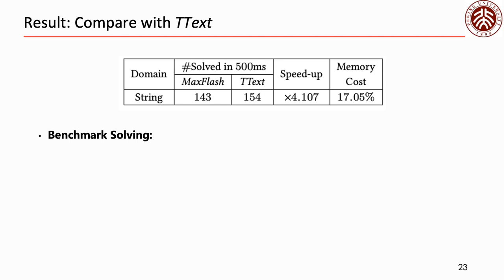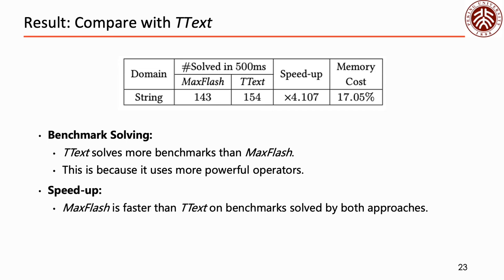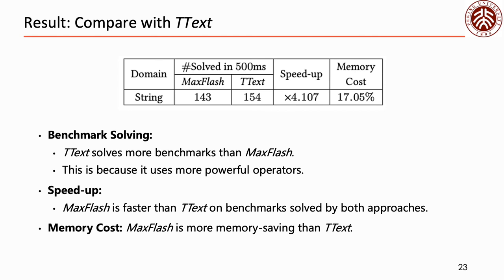This table shows the results of the comparison with transformation.text. The result shows that ttext solves more benchmarks than MaxFlash. This is because ttext is built on an unpublished grammar in which more powerful operators, such as regex matching, are enabled, making some hard tasks much easier. Even so, MaxFlash still achieves a speed-up on benchmarks solved by both approaches, and is much more memory-saving.